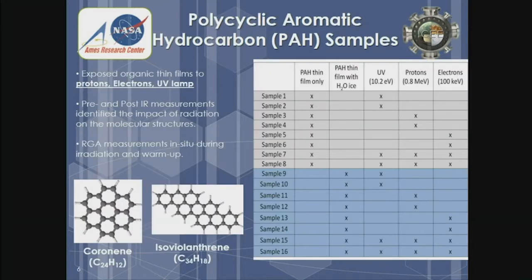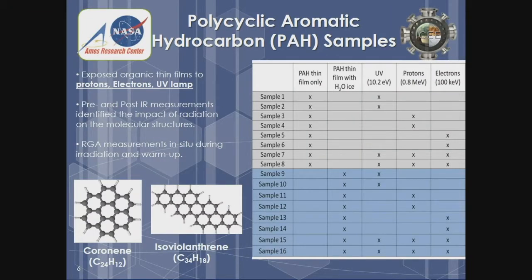We did some experiments called ICE — Investigation of Carbon and Evolution Experiments. We took two PAHs: coronene, which is a 24-carbon atom very compact PAH structure, and isovalanthrine — I'll call it IVA for short — which is a 34-carbon atom PAH. We deposited them as thin films on salt windows, then exposed them to UV photons, protons, and electrons. While we were doing that, we did pre- and post-infrared spectroscopy measurements.